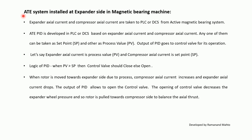For the AT installed at the expander side in a magnetic bearing machine: expander axial current and compressor axial current are taken to the PLC or DCS from the active magnetic bearing system. An AT PID is developed based on these currents, with one as set point and the other as process value. The output of the PID goes to the control valve. Let's say expander axial current is the process value (PV) and compressor axial current is the set point (SP). The PID logic is: when PV is greater than SP, the control valve should close; otherwise open.